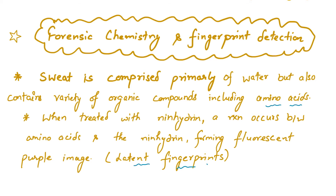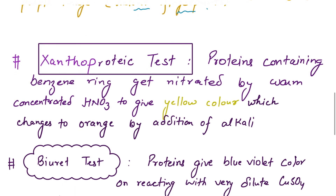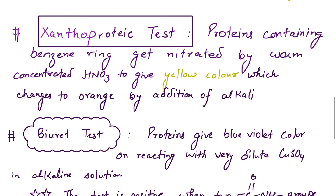Moving on to the next test — the xanthoproteic test. Proteins that contain a benzene ring get nitrated by warm concentrated nitric acid to give a yellow color, which basically changes to orange with the addition of alkali. That is the xanthoproteic test, used for proteins.